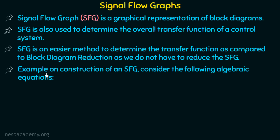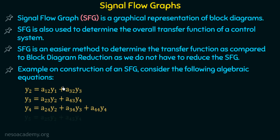Now let us take an example on construction of an SFG. We will see how a signal flow graph is constructed. Consider the following algebraic equations: y2 = a12·y1 + a32·y3; y3 = a23·y2 + a43·y4; y4 = a24·y2 + a34·y3 + a44·y4; and y5 = a25·y2 + a45·y4. Now let us try to represent these algebraic equations in a graphical manner.